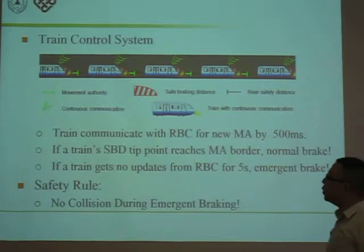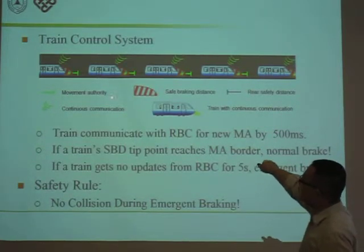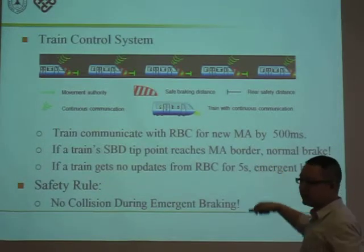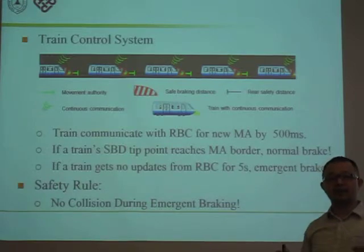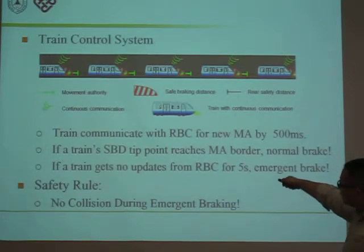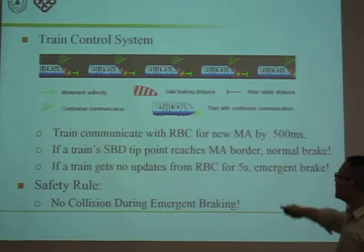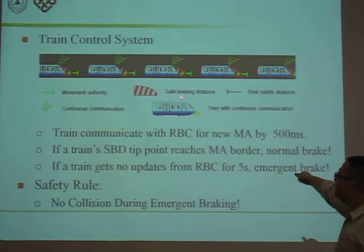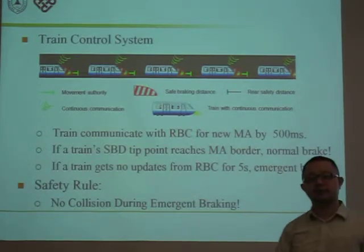For train control systems, we have several concepts. The first concept is movement authority, or MA — a segment of railway that a train is authorized to move within. The second concept is the safe braking distance, SBD, which is the estimated distance for a train to reach a full stop. The third concept is radio block concentrator, RBC, which refers to the wireless communication backbone of the train control system.